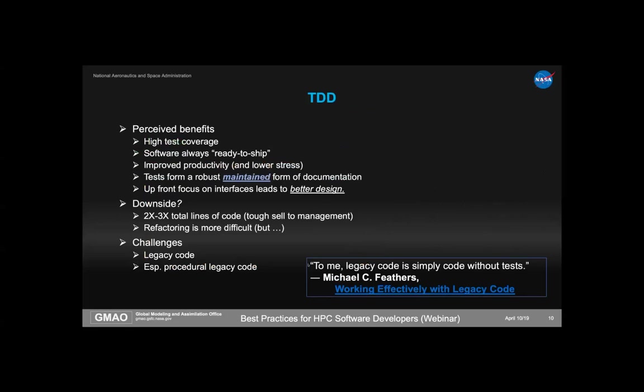The perceived benefits of TDD include high test coverage — you never write code without a test already covering it. Your software is always ready to ship; it's just a matter of which features have been implemented. The tests form a robust form of documentation. Unlike in-code comments that go stale, a test that's always exercised will break if it goes out of date. And focusing on writing tests first leads you to think more about interfaces and less about algorithms, often resulting in better interface design.